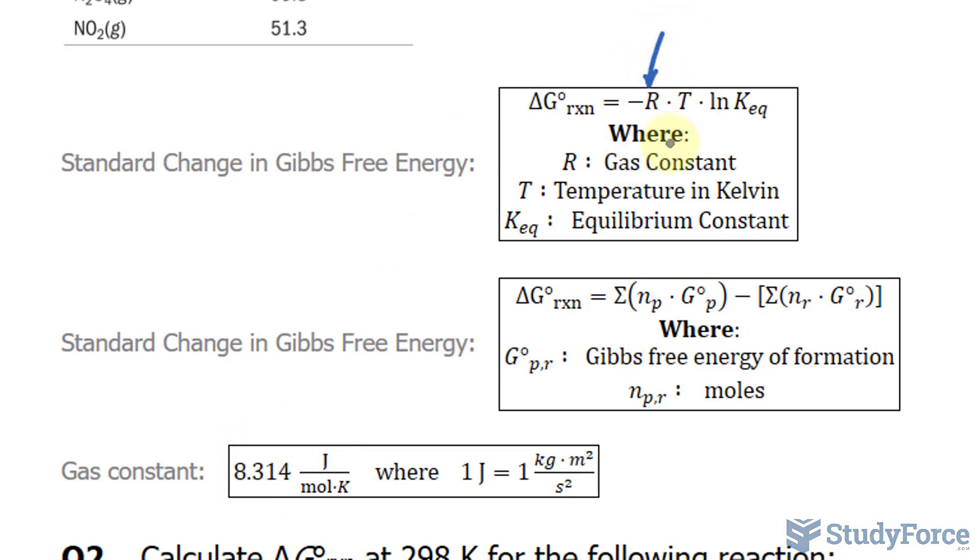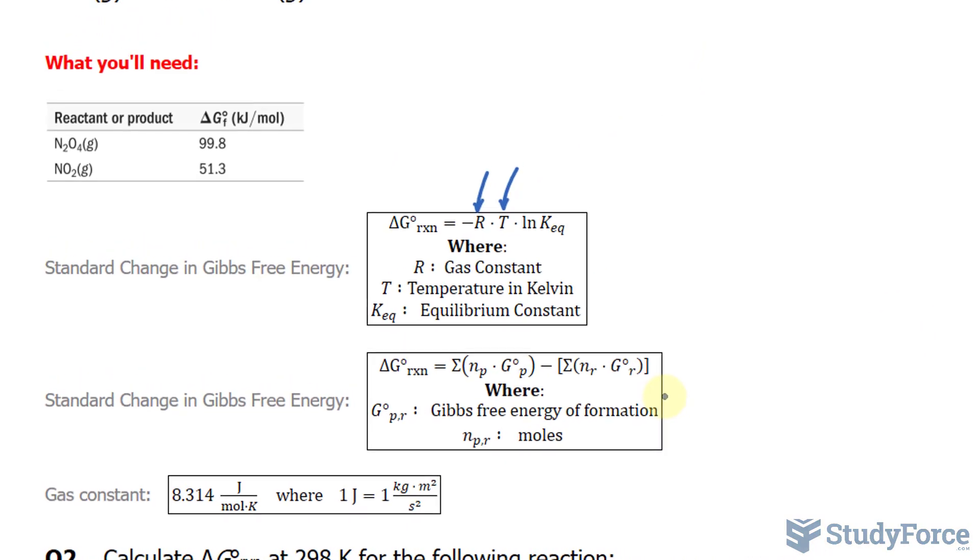We know what T is, it's given in the question. We don't know what that is, but we can find out what delta G is for this reaction. And that's done by using the formula underneath. Let's start by using this formula.